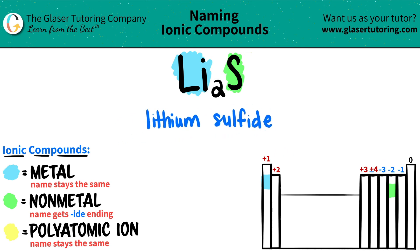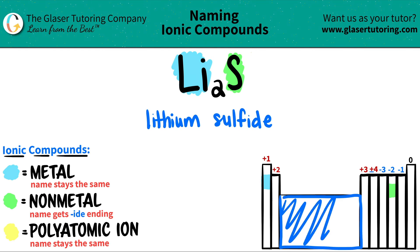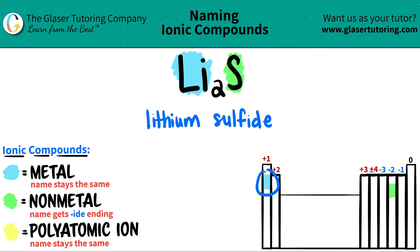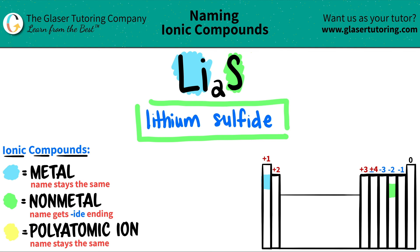Now just do one last check to make sure we don't need any Roman numerals. Only transition metals need Roman numerals, which is like this little block over here. But since lithium's over here in group one, we don't need a Roman numeral and you're done. This is your final answer — Li2S is lithium sulfide.